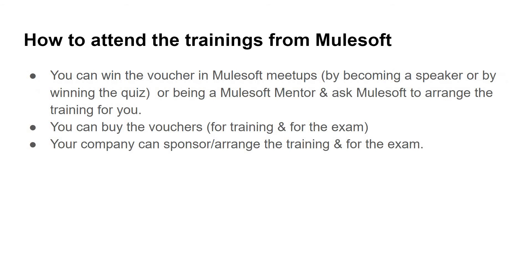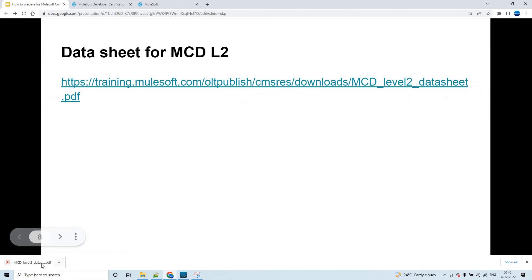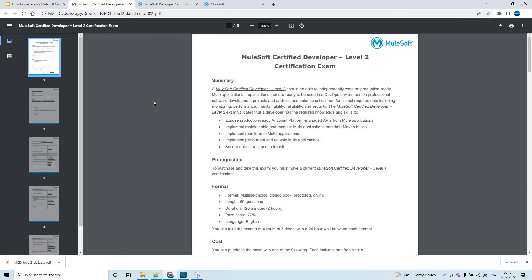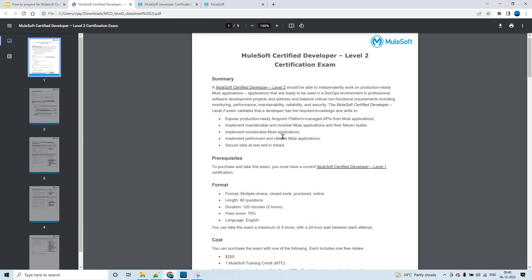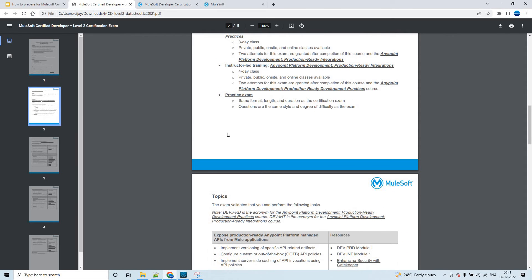MuleSoft will give you student files for each course — both PRI and PRD. You'll get MuleSoft material slides to go through thoroughly. You also get a data sheet for MCD Level 2, available as a PDF. This is a common PDF covering both PRD and PRI since it is certification-based, not per course.